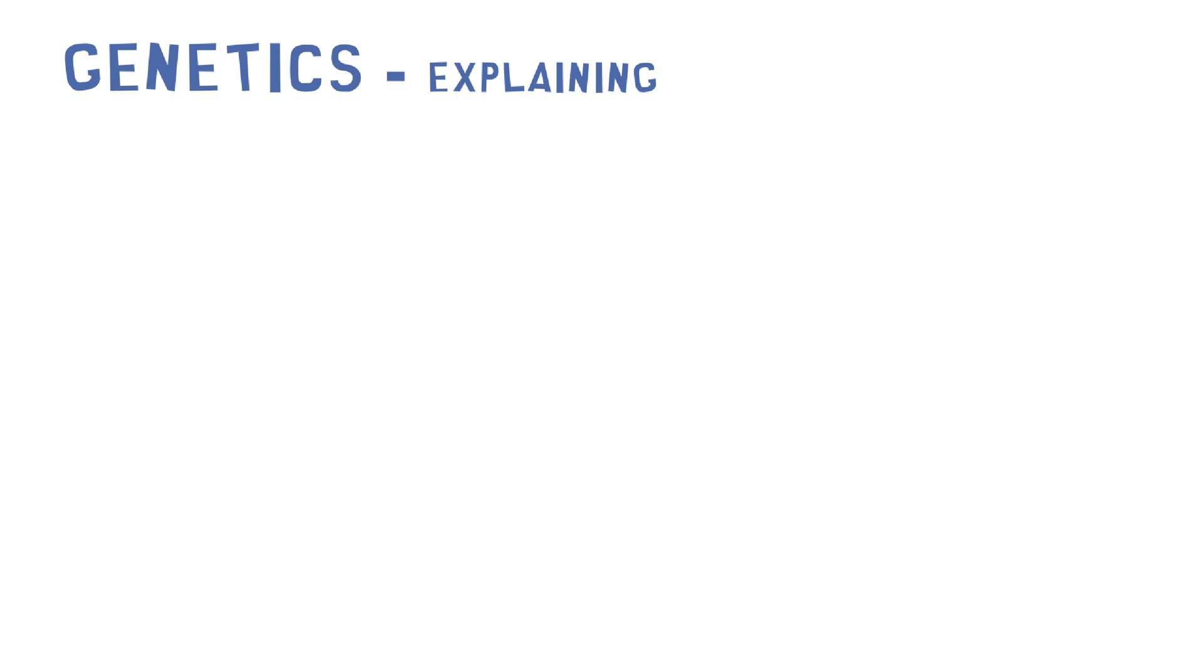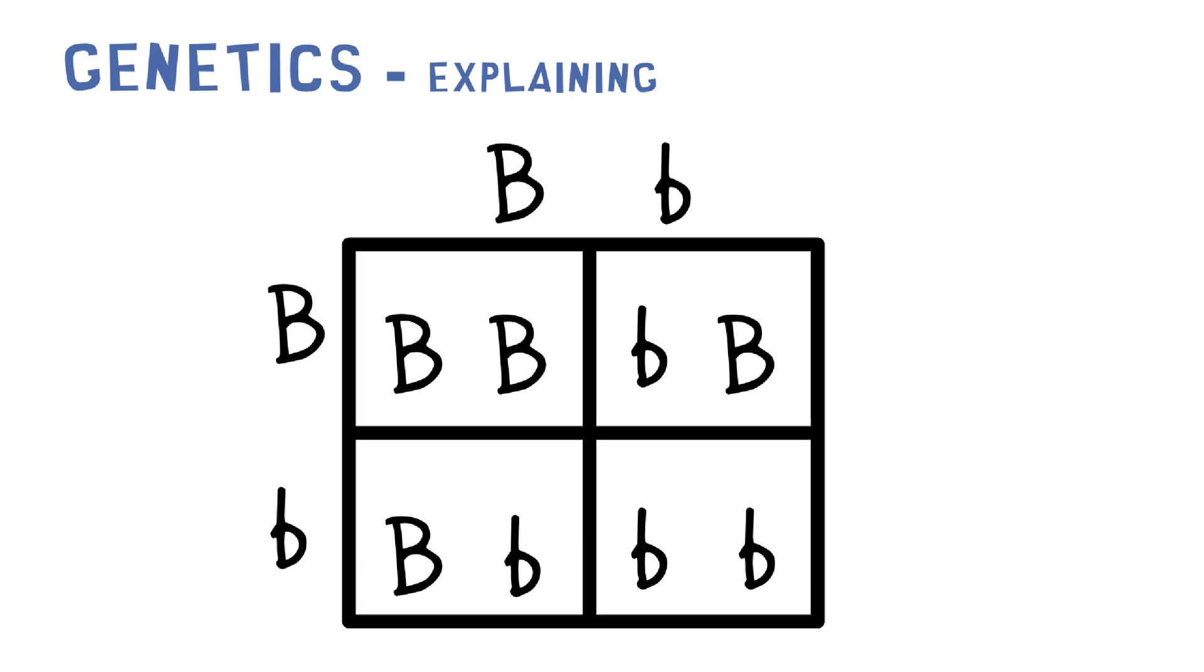Okay, now we're almost done. I just have one more thing to explain and then we'll be finished: the different types of Punnett squares. Now you've already seen one of them. This one is the monohybrid Punnett square.